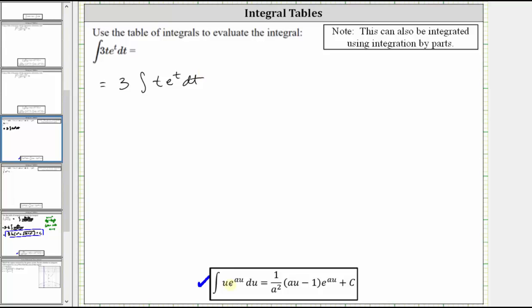From here, notice how u, which in this case is a function of t, is equal to t, which means differential u is equal to differential t. Since du equals dt, we should be able to recognize u substitution is not required.